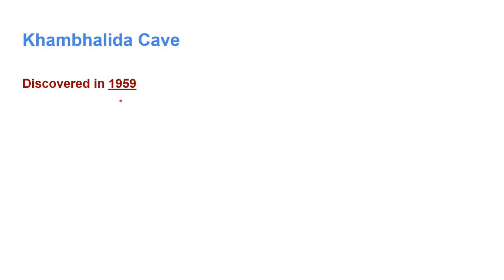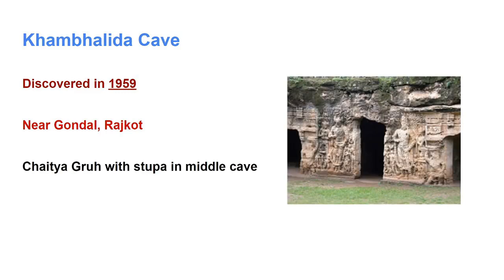The next one is Kambalida cave, discovered in 1959 AD. They are situated at Kambalida near Gondal, 70 km from Rajkot. Three of them are remarkable. A Chaitya group with a stupa is situated in the middle cave. Figures of Bodhisattvas and statues of devotees are standing on both sides of the entrance path, supported by trees. They are of the 2nd or 3rd century.